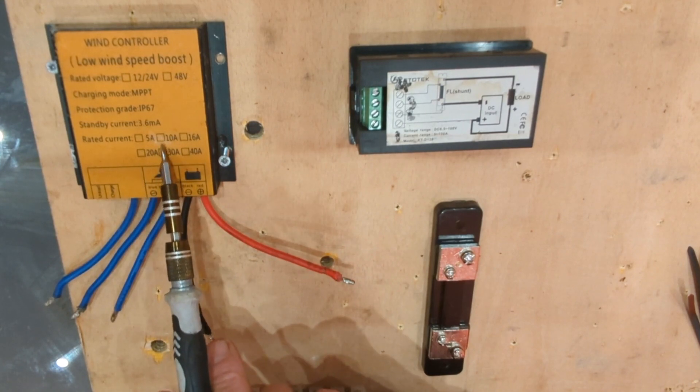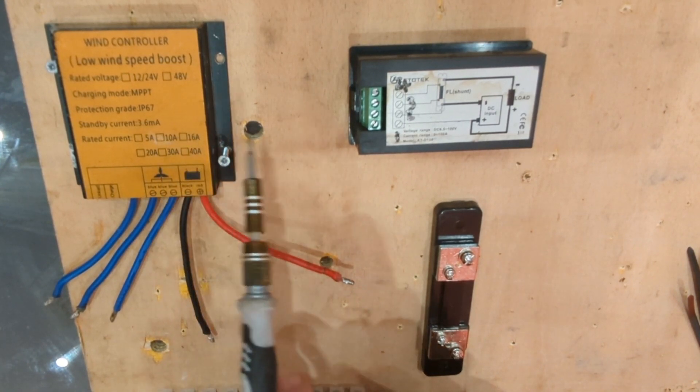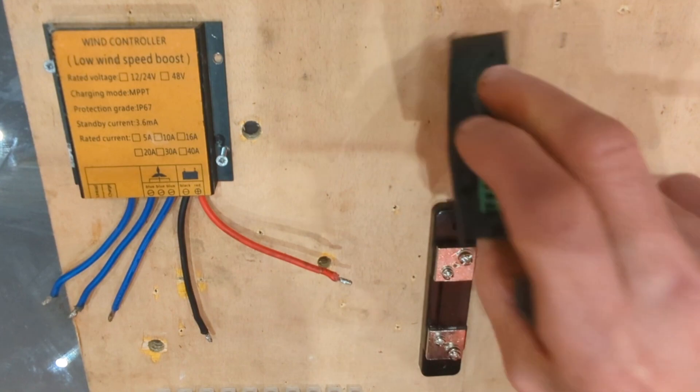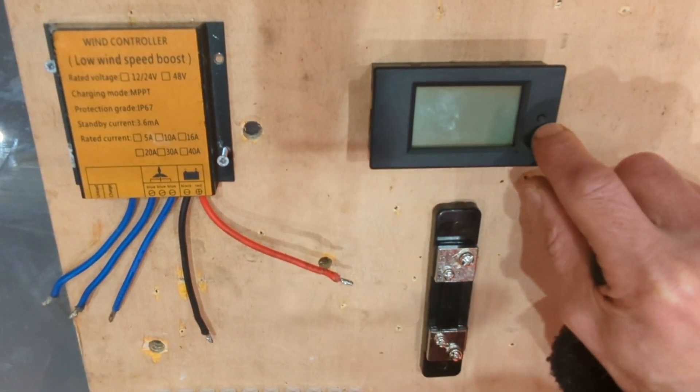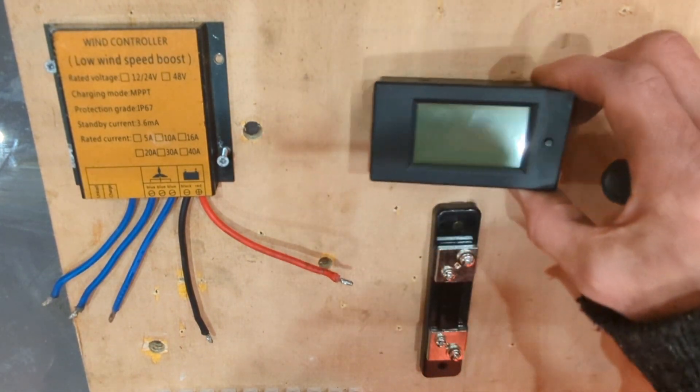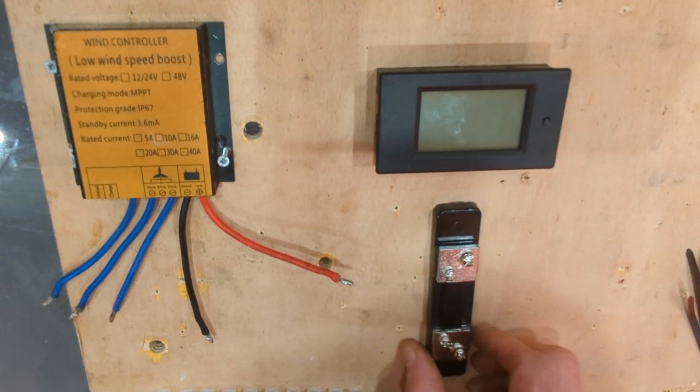What I would call a budget wind turbine controller, a budget meter which actually sits like that when it's in the display with this little button on the right hand side which turns the blue backlight off.